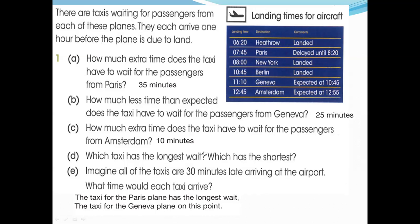Imagine all of the taxis are 30 minutes late arriving at the airport. All arrival times need to have 30 minutes added. The taxis arrive one hour before landing, so if they are 30 minutes late, they arrive only 30 minutes before landing. Take each scheduled taxi arrival time and subtract 30 minutes from it to find the new arrival time.